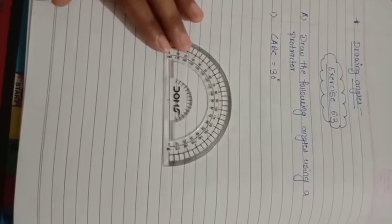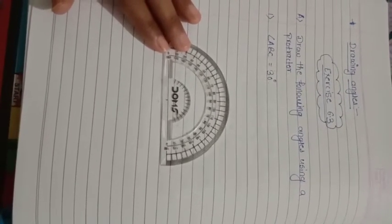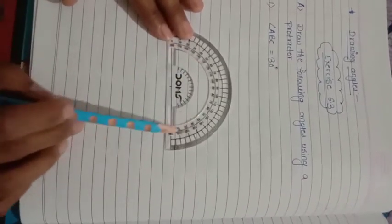Children, you must have seen this instrument in your geometry box. This is called a protractor. It has two edges: straight edge and semi-circular edge.